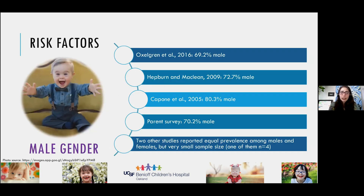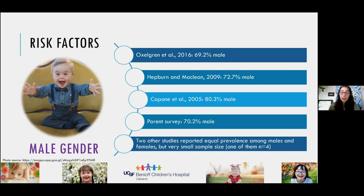Are there any risk factors for having autism? A number of studies noted that the preponderance of their patients with a dual diagnosis were male. In our parent survey, 70% of respondents had children with a dual diagnosis who were male. Other smaller studies did not find a specific correlation between gender and risk. These findings are suggestive of a male prevalence of autism in children with Down syndrome, consistent with the general population.